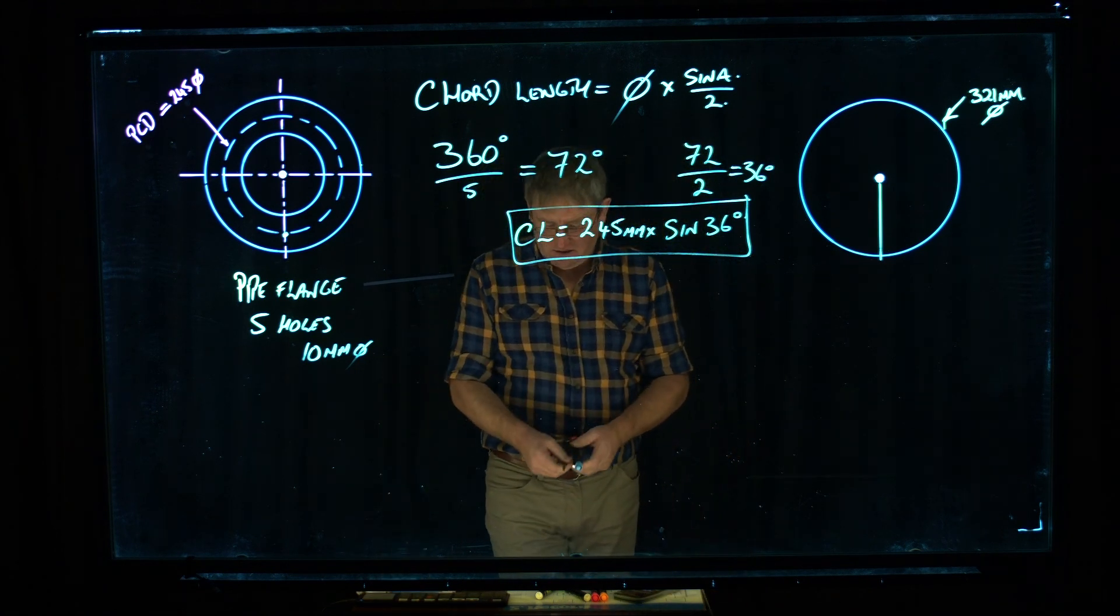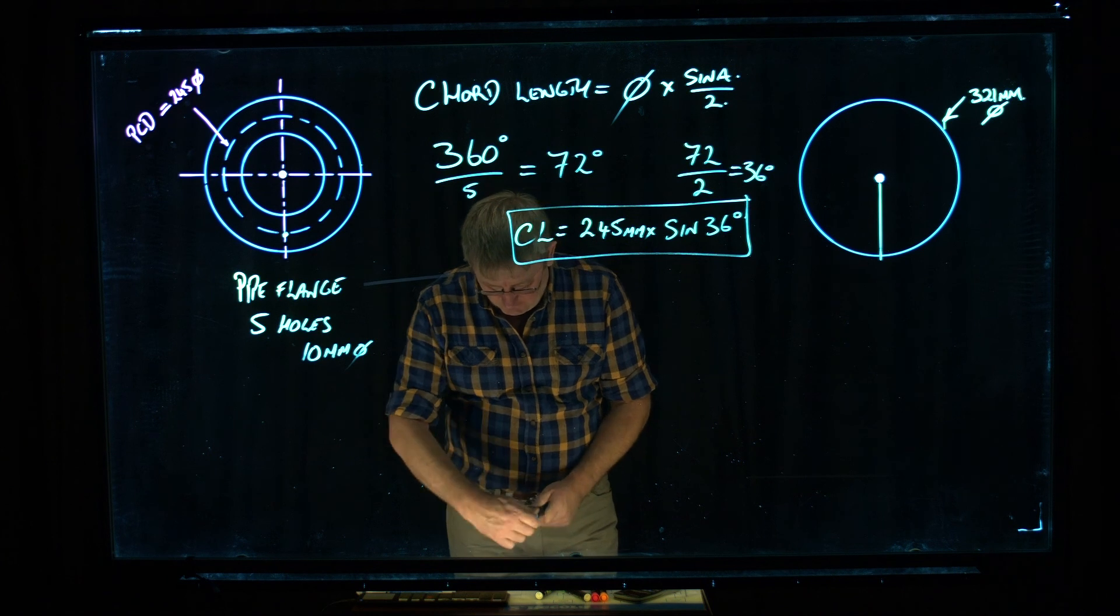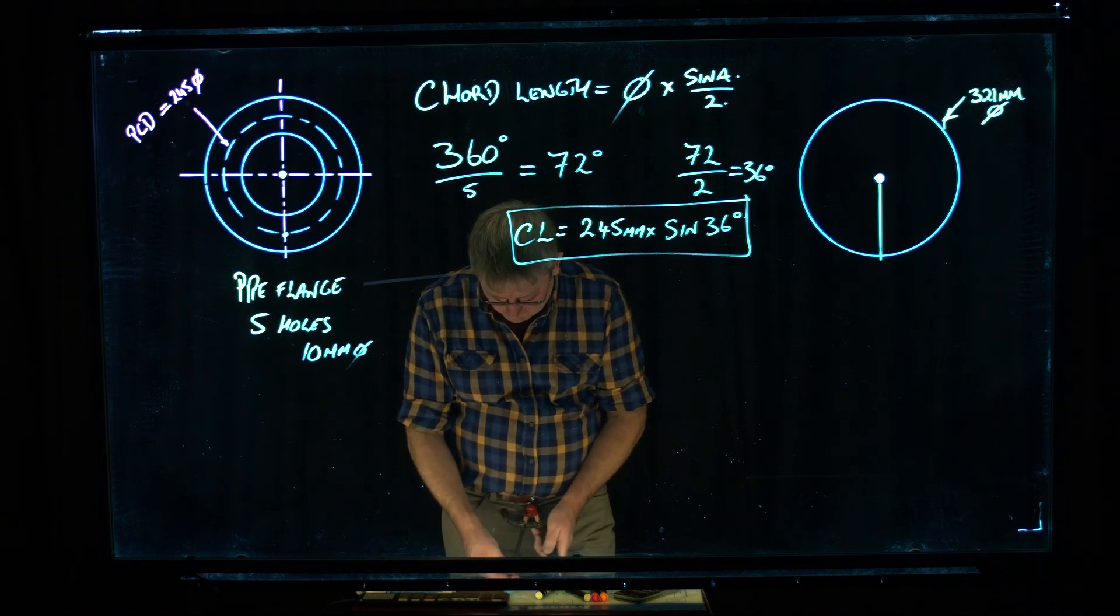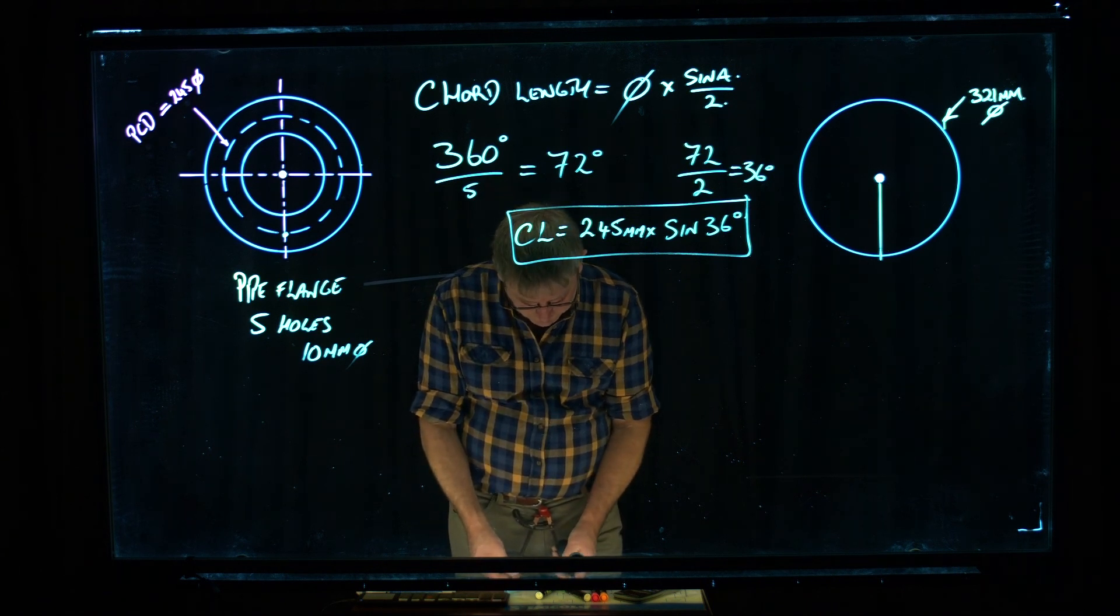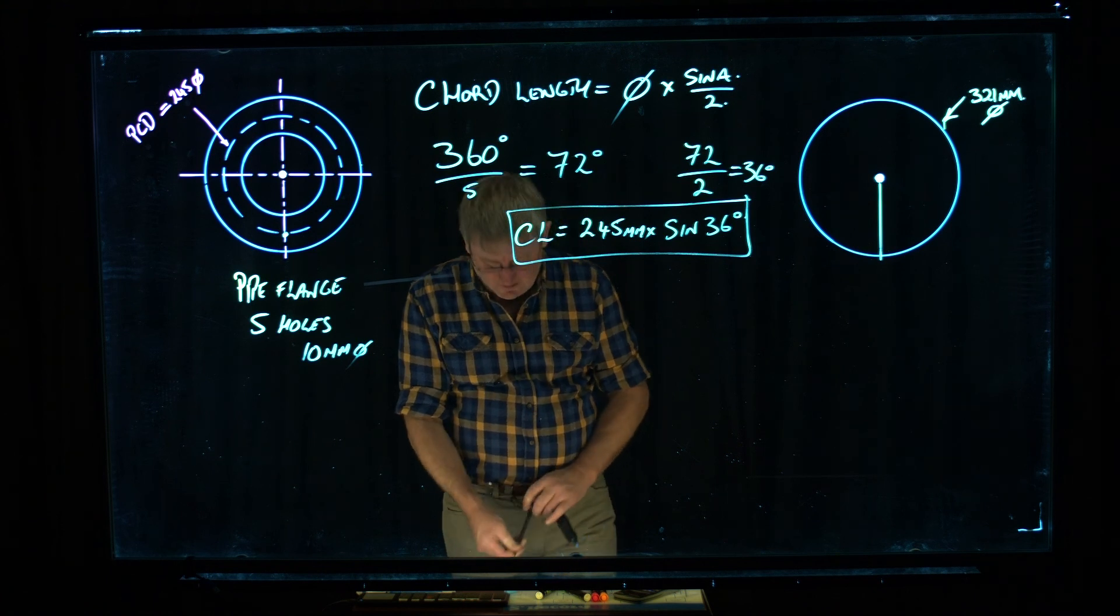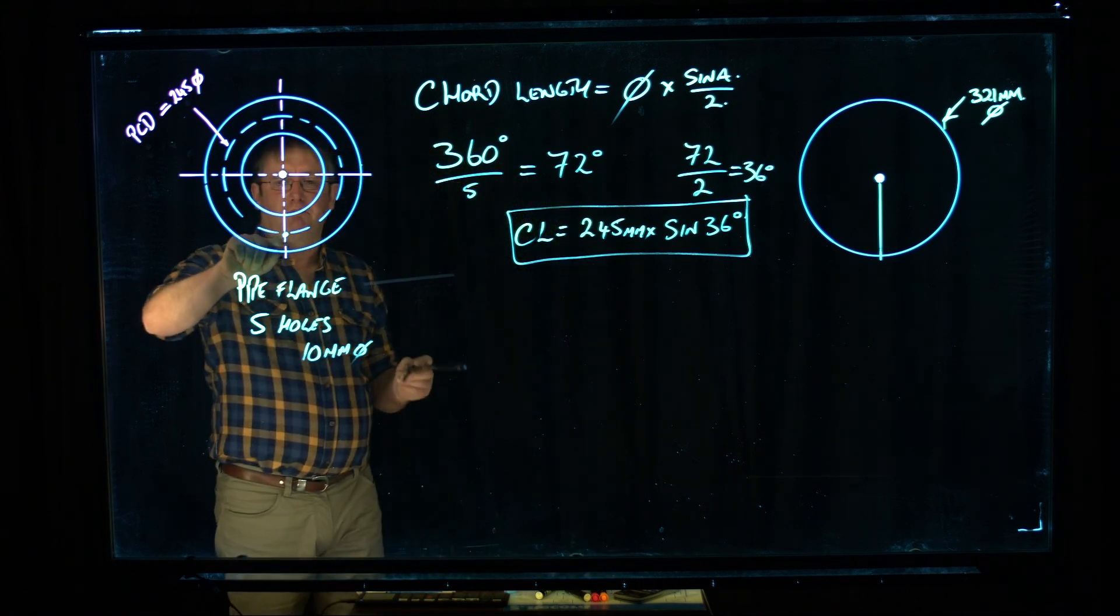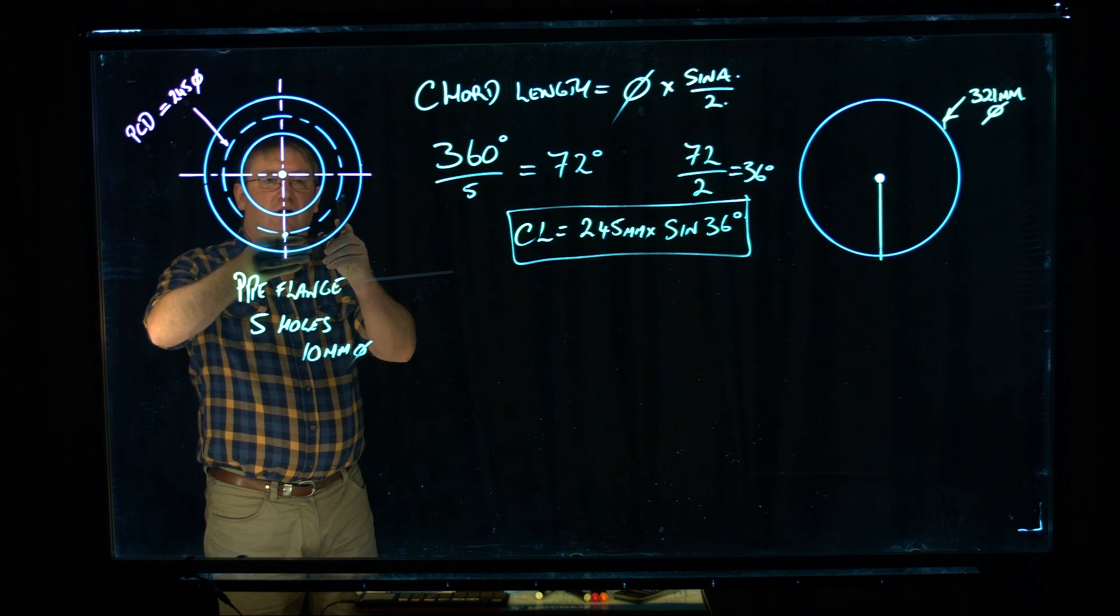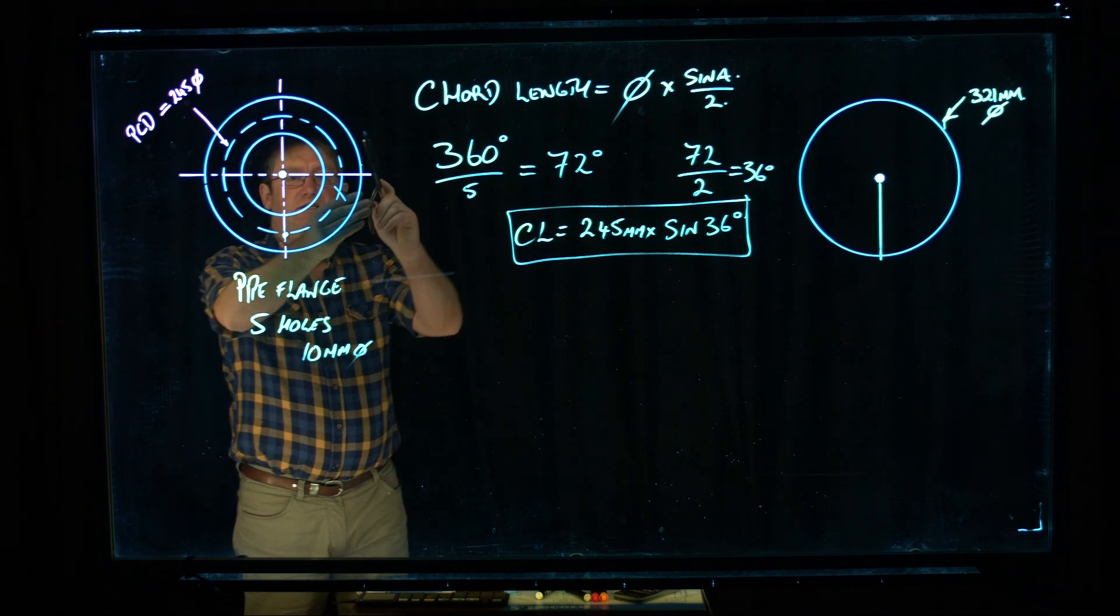I'm going to take my compass, and I'm going to set it to 144mm on the rule that I've got here. You can't see this, but that's what I'm doing. And I'm using this bottom point here. I'm going to scribe an arc here. That's 72 degrees.